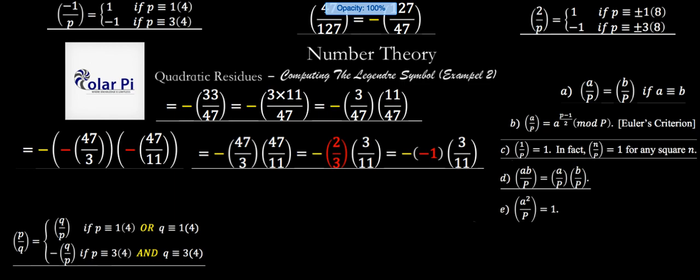So in our next step, we could just write that negative yellow and then 47 over 3 and 47 over 11. And unsurprisingly, what we're going to do next is reduce 47 mod 3 and then reduce 47 mod 11. Reduce mod 3, 47 turns to 2. So we have 2 over 3 here in place of 47 over 3. And then in place of 47 over 11, we can write 3 over 11.